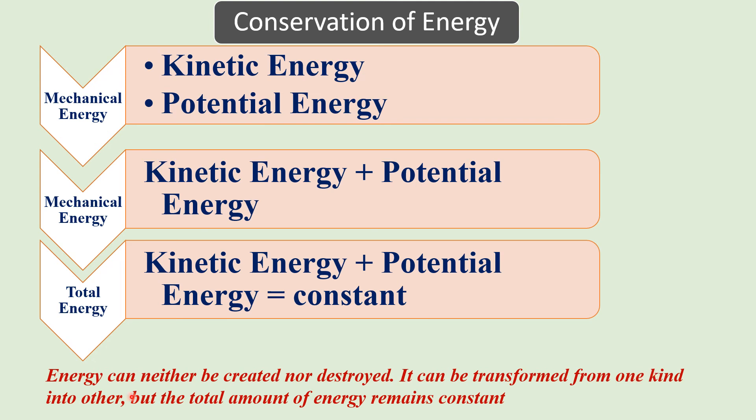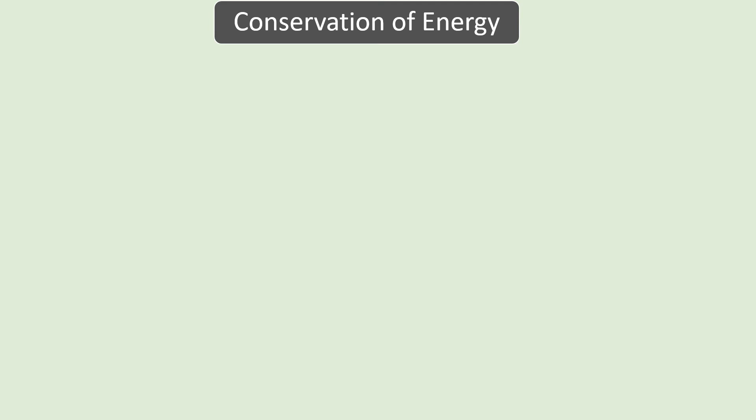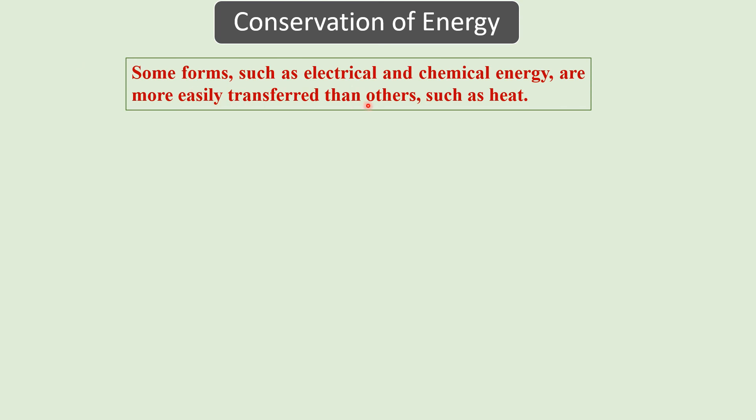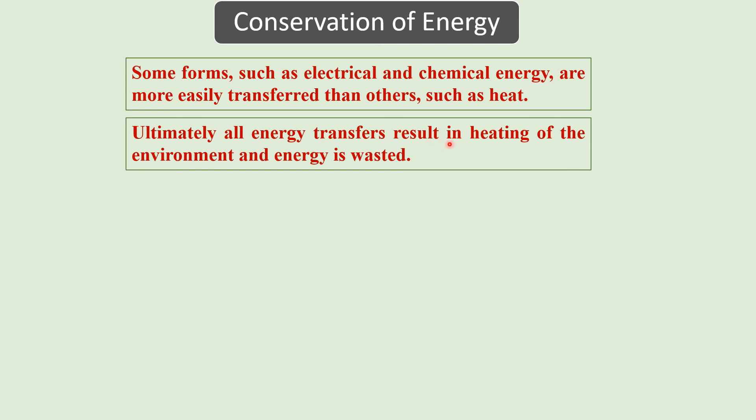This gives us the law of conservation of energy: energy can neither be created nor destroyed; it can only be transformed from one kind to another, but the total amount remains constant. In daily life we see energy transformations — some forms such as electrical and chemical energy are more easily transferred than others such as heat. Ultimately all energy transfers result in heating of the environment, and energy is wasted. In the hammer-nail example, some potential energy converts to kinetic energy, some to work against friction, and on impact some to heat and sound energy.